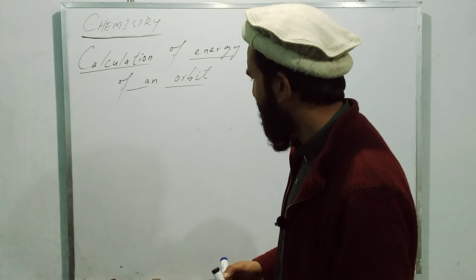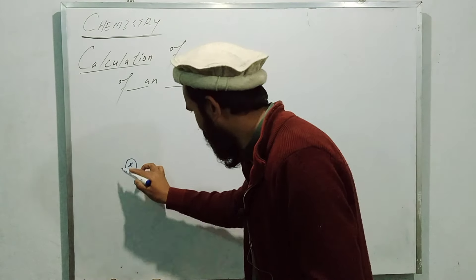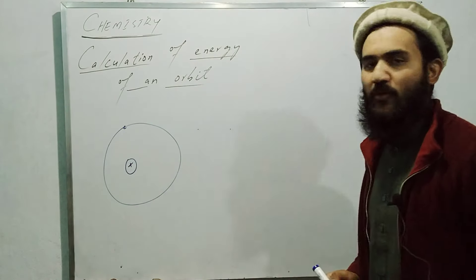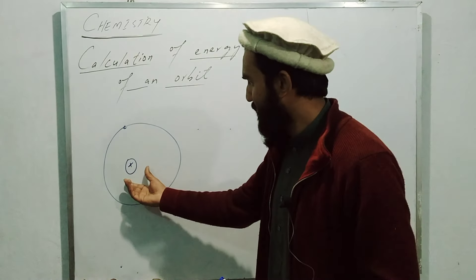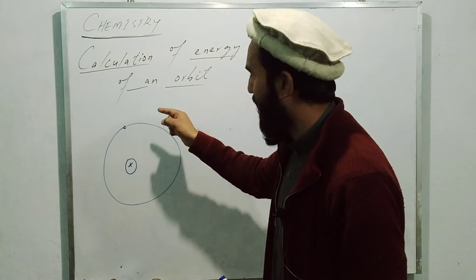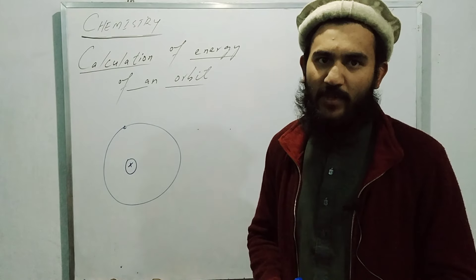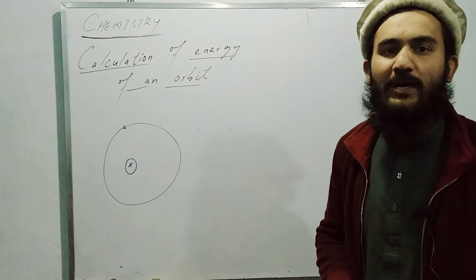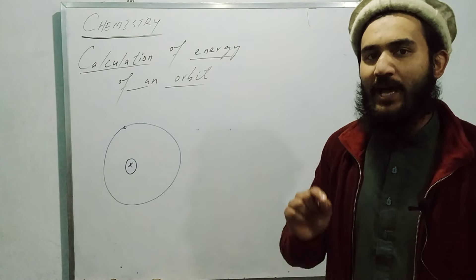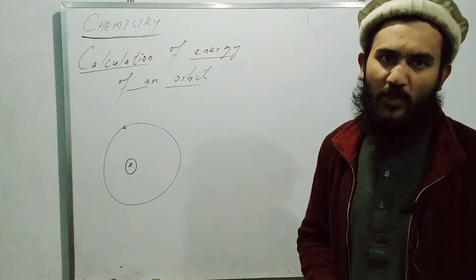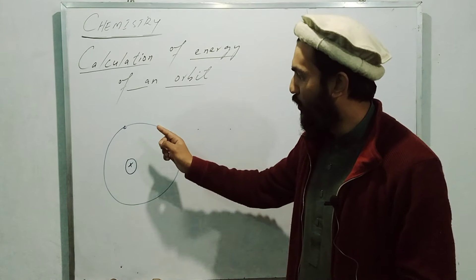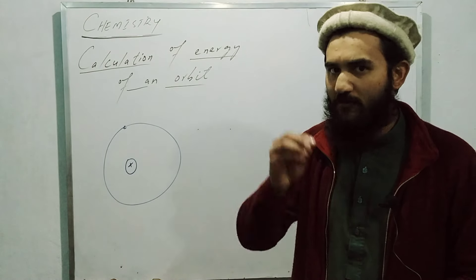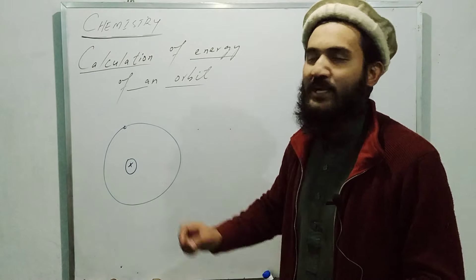Bohr has said that at the atom's center is the nucleus, and around it, on a circular path, the electron revolves. Now this revolving electron has total energy, which is the sum of kinetic energy and potential energy. Due to its motion, this revolving electron possesses kinetic energy.